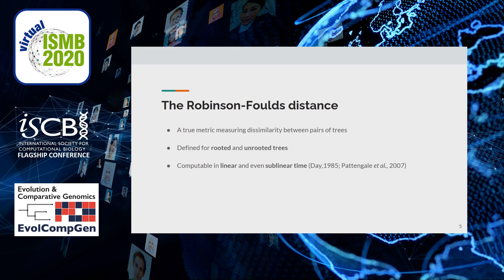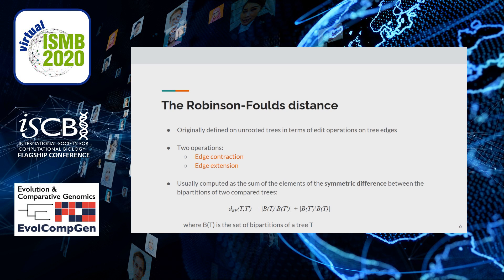The Robinson-Foulds distance is a well-established measure between phylogenetic trees. Despite a lack of biological justification, it has the advantage of being a proper metric and being computable in linear time. For phylogenetic applications involving genes, however, a crucial aspect of the trees ignored by the RF metric is the type of the branching events. The Robinson-Foulds distance was originally defined for unrooted trees in terms of edit operations on tree edges — specifically edge contraction and edge extension. The RF distance is usually calculated by computing the sum of the elements of the symmetric difference between the bipartitions of the two compared trees.